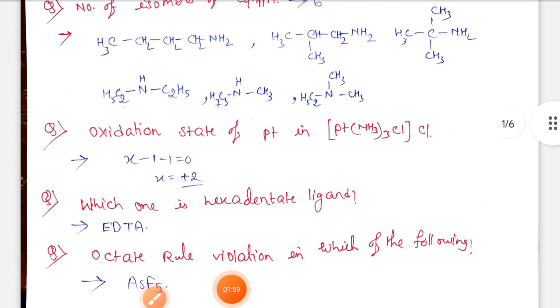Oxidation state of platinum in [Pt(NH3)3Cl]Cl. When we calculate the oxidation state, we can take platinum as X. Ammonia is a neutral ligand so it is 0, and chlorine is a monoanionic ligand so minus 1. X minus 1 minus 1 equals 0, so X equals plus 2.